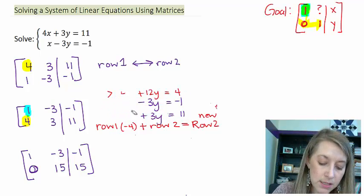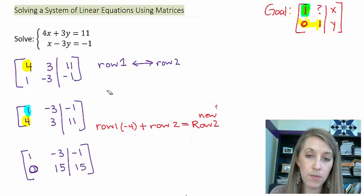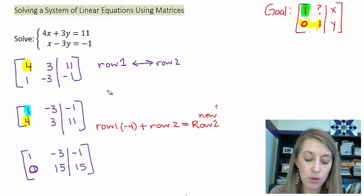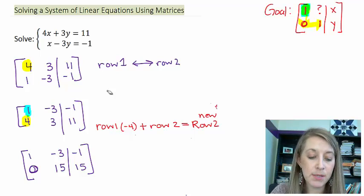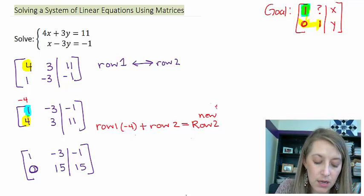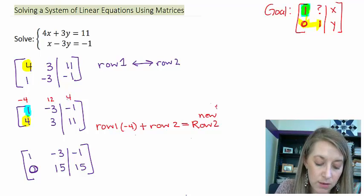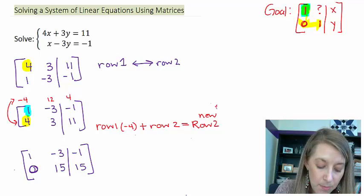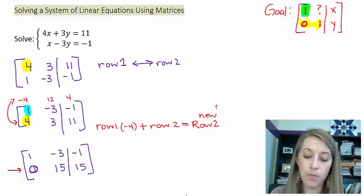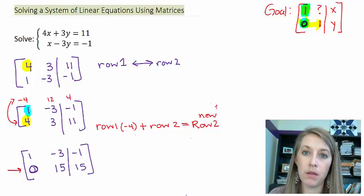So again, this is what we're trying to get away from, and just going from the numbers in front. So I took my original row 1 and I multiplied it by negative 4. And a lot of times I do the scratch work above it so I can see. 1 times negative 4 gives me negative 4. Negative 3 times negative 4 gives me 12. Negative 1 times negative 4 gives me 4. So that's what I did there. I add it to row 2. And that becomes my new row 2. So I have got a 0 right where I want it.